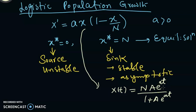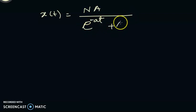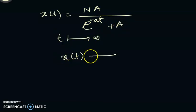In this form: x(t) = NA/(e^(-at) + A). Now as t goes to infinity, x(t) will converge to NA/A, that is N.